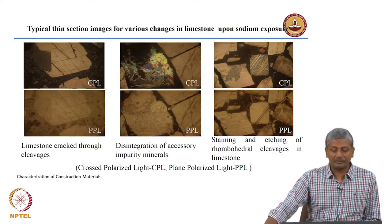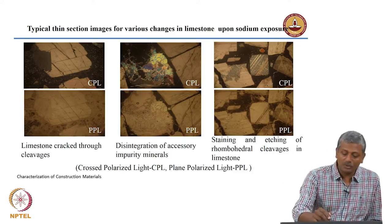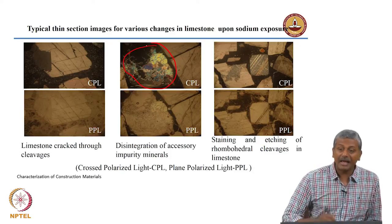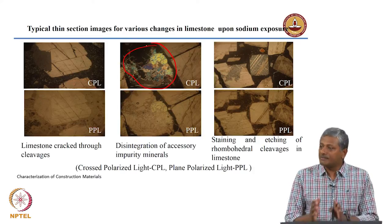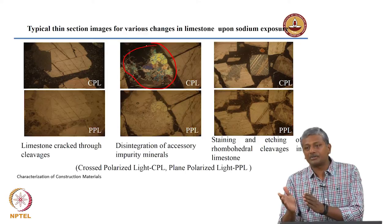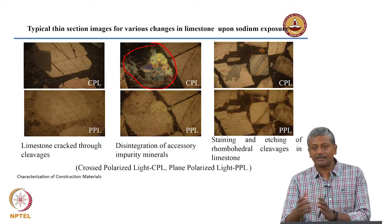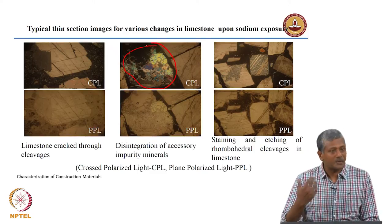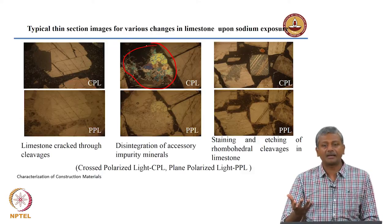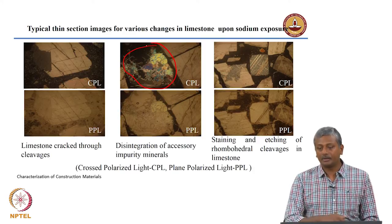These thin section images show various changes in limestone upon sodium exposure. What you see are accessory minerals present in limestone. Even if limestone is stable at high temperatures of 700 to 900 degrees Celsius, it may have some impurity minerals which start getting disintegrated at earlier temperatures, and that could be the reason why, in spite of having limestone as an aggregate in the cementitious mortar, we are still getting a high level of deterioration.